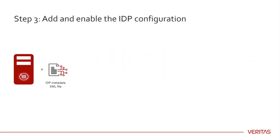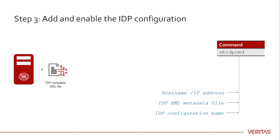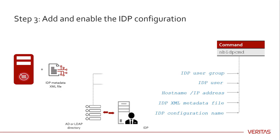Next, log on to the master server and run NBIDP CMD to add and enable the IDP configuration. Pass the following as options to the command: name of the IDP configuration, path to IDP XML metadata file, host name or IP address of the master server, IDP user, and IDP user group. Ensure that the names of the IDP user and IDP user group are the same as the names of the SAML attributes mapped to the user principal name and the member of attributes.